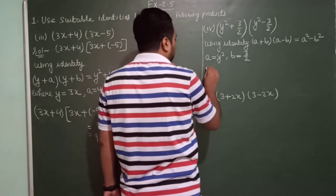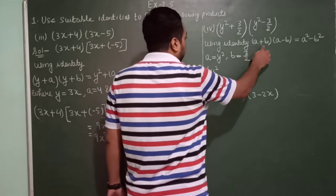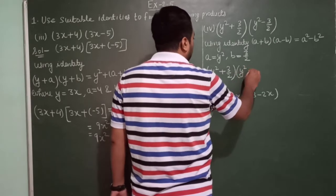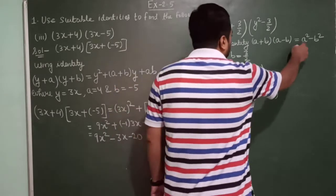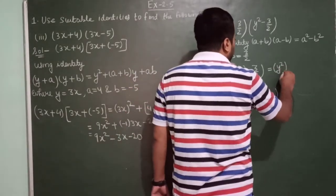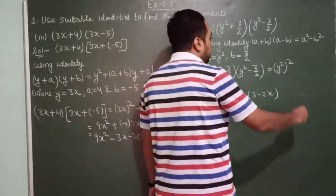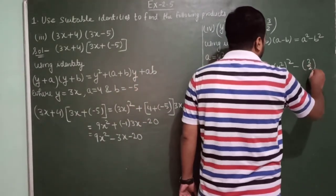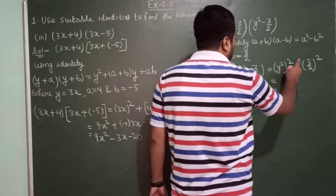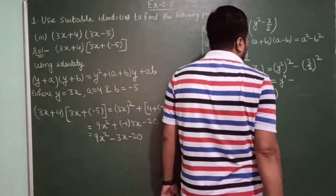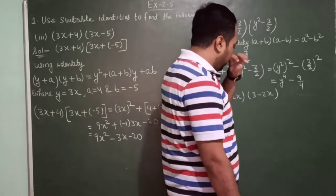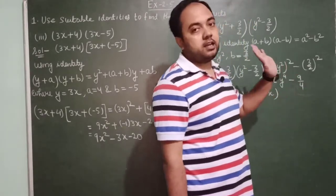So writing the expression: (y² + 3/2) into (y² − 3/2). Applying the identity: a squared minus b squared, where a is y squared and b is 3/2. This gives (y²)² minus (3/2)², which is y to the power 4 minus 9 upon 4. So the product is y⁴ minus 9/4.